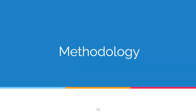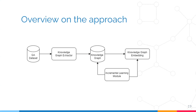Moving on to our methodology — this is an overview of how our approach works, focusing on two phases. In the training phase, we extract the knowledge graph from a question answering dataset, then feed it to a knowledge graph embedding model that learns the features of the extracted facts. In the deployment phase, the incremental learning module asks a human in the loop to answer a question if the model cannot answer correctly, then feeds the result to the knowledge graph and embedding model to keep learning new knowledge.